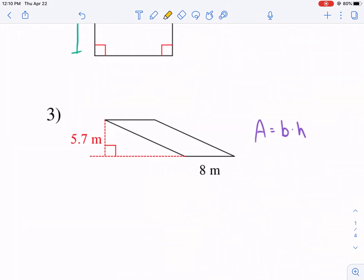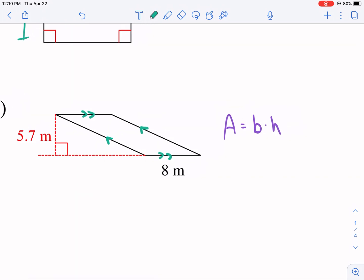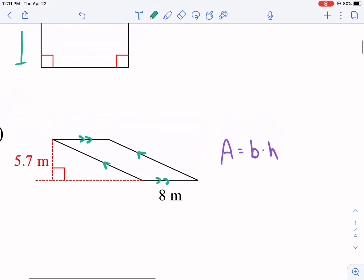Third shape we have. This is called a parallelogram. So these two sides, opposite sides, are parallel. Now, it's kind of like a rectangle that's been squashed. So imagine that this kind of gets squashed and so it tilts over like this. If you can imagine it gets squashed over.